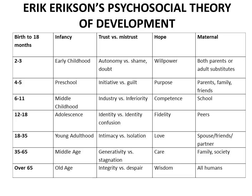Ages 18 to 35 — young adulthood — is where we are supposed to be finding our life partner, developing intimacy, and building lifelong friendships. The crisis is intimacy versus isolation. If a person doesn't feel they can open themselves up to someone else, they become isolated — the lone wolf. If they develop a good sense of intimacy, the strength they develop is love. Their primary influences are their spouse, friends, and partner.